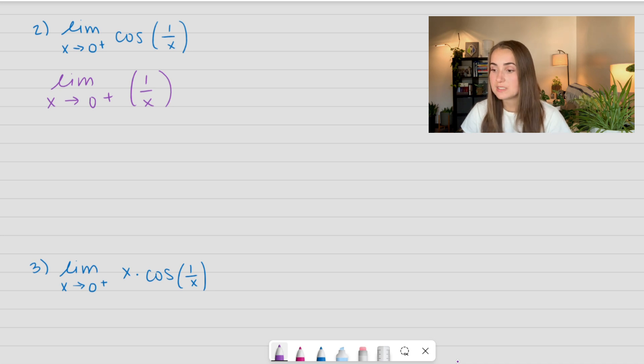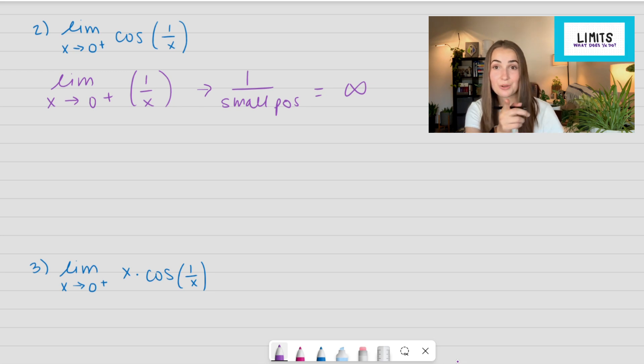So when we approach 0 from the right side, our denominator gets really, really small. So we get 1 over a small positive number, which blows up to infinity. If you want to figure out why, I have the video linked right here. You can go ahead and check it out. I go over that in greater detail.